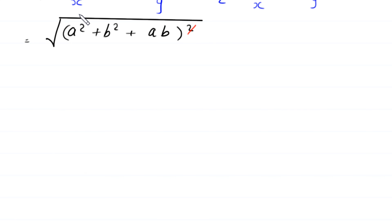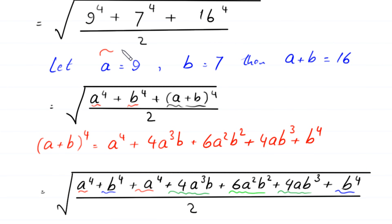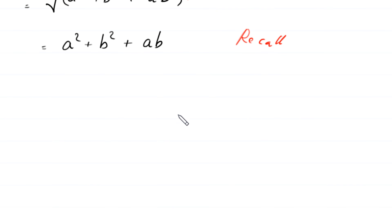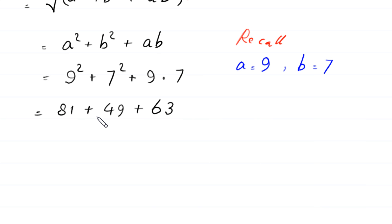The square cancels with the square root, leaving a squared plus b squared plus a times b. Recalling that a equals 9 and b equals 7, this becomes 9 squared plus 7 squared plus 9 times 7, which is 81 plus 49 plus 63, equal to 193.